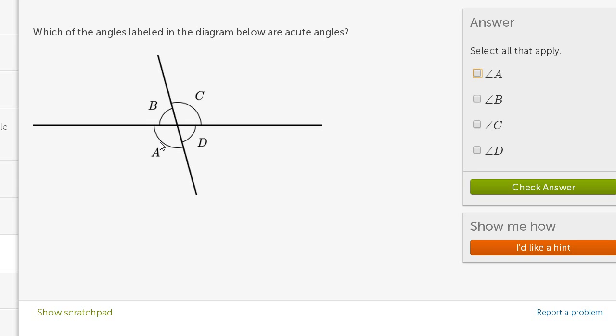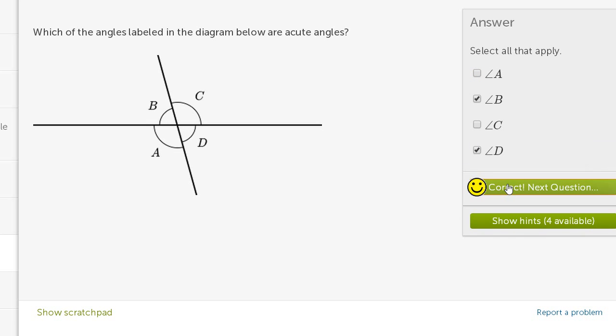A and B, sorry, A and C both look larger than 90 degrees. But B and D both look less than 90 degrees. So B, I'll go with B and D are the acute angles here.